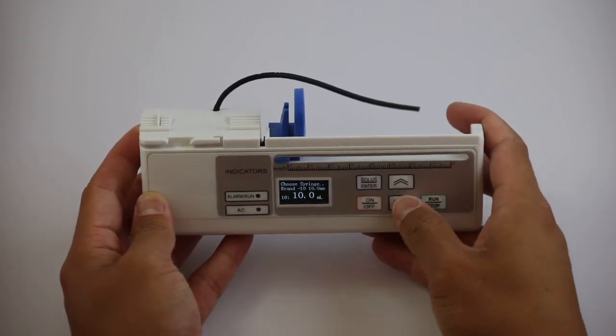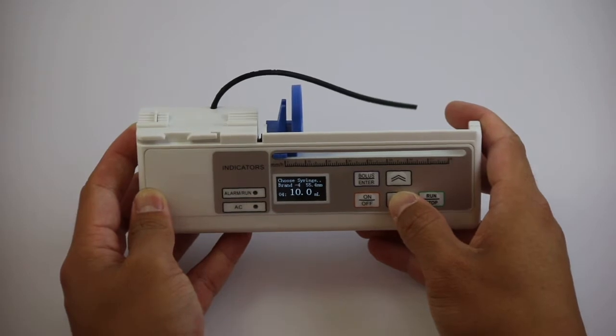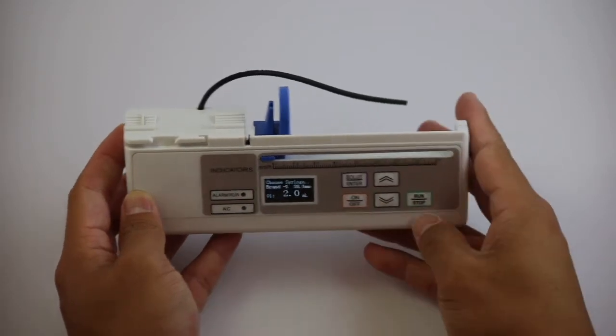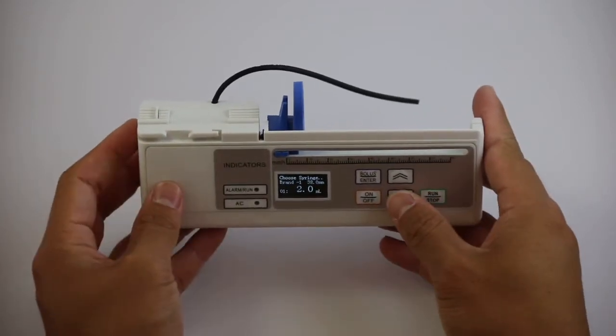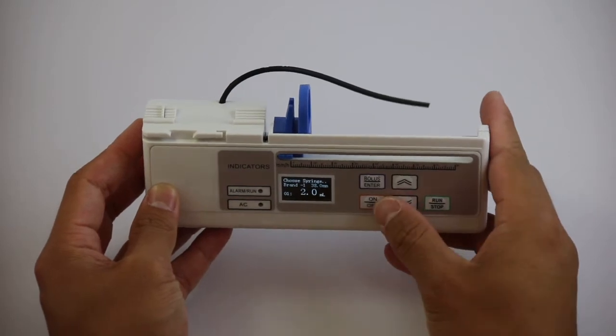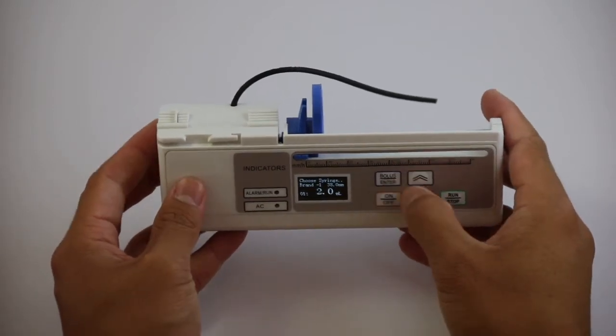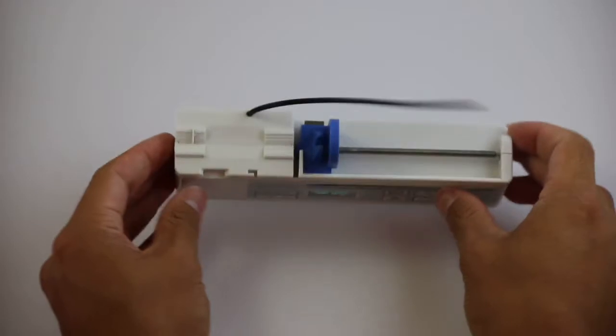As you can see, here are the ten different syringe slots that can be modified. Click the up and down arrows to select the syringe that you wish to calibrate. Click enter to set the syringe effective length.